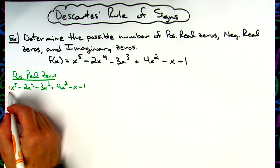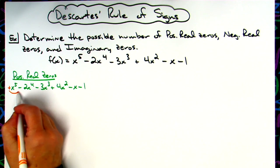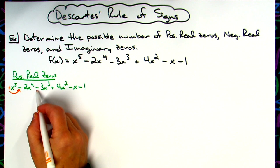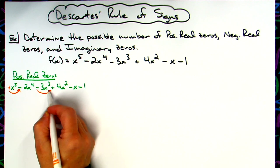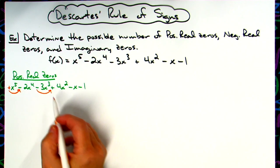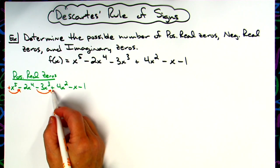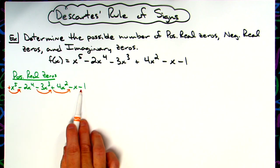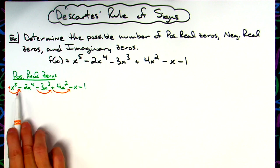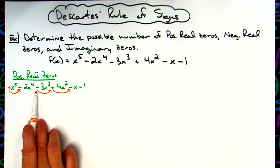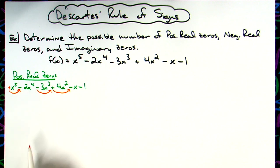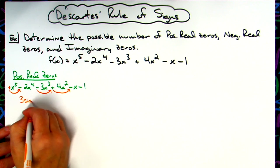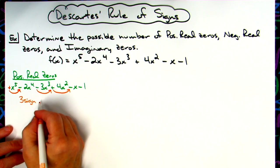I'm going to have a change in signs from positive to negative going left to right — that's one sign change. I'll have another one going from negative to positive. And then one more going from positive to negative. From here to here the sign does not change — it's negative to negative. From here to here it does not change either — negative to negative. So in other words, I have three sign changes.